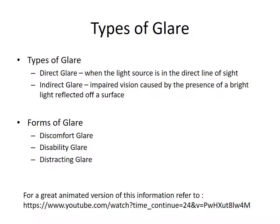Glare is commonly known as direct glare when the light source is in the direct line of sight, and indirect glare — also known as reflected glare — when there is difficulty seeing in the presence of a bright light being reflected off a surface. In addition to the causes of glare, there are different forms of glare that can impact on functional vision.